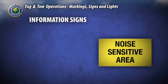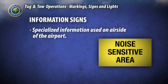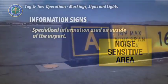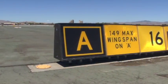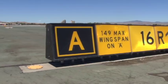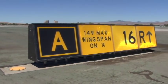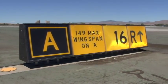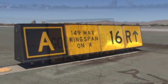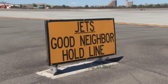Information signs are installed on the air side of an airport but are not mandatory signs, guidance signs, or runway distance remaining signs. These types of signs include noise abatement procedures, crossing vehicle roadways, or other specialized information. These signs have black inscriptions on yellow backgrounds.